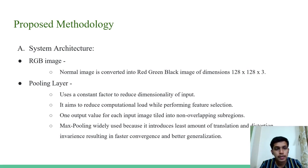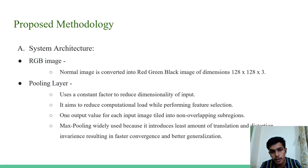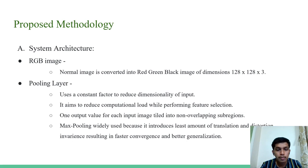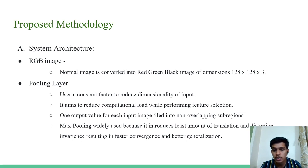Proposed methodology. Starting with system architecture: the first step is RGB image. A normal image is converted into a red-green-blue RGB image of dimensions 128×128×3. Regarding the pooling layer: pooling is used for reducing the dimensionality of input by a constant factor. Its aim is to reduce computational load while performing feature selection. Max pooling is widely used because it introduces the least amount of translation and distortion variance, resulting in faster convergence and better generalization.